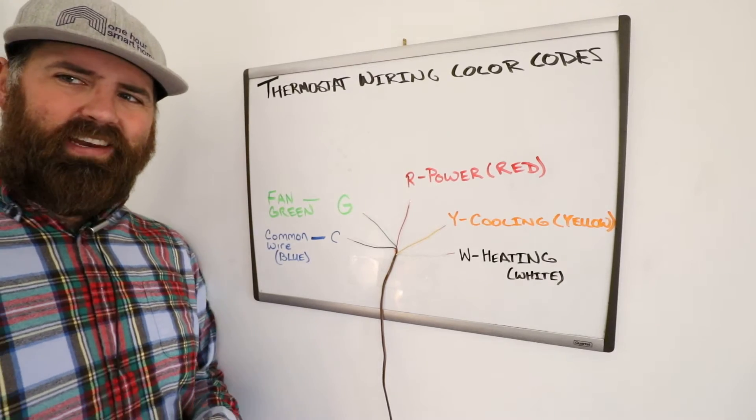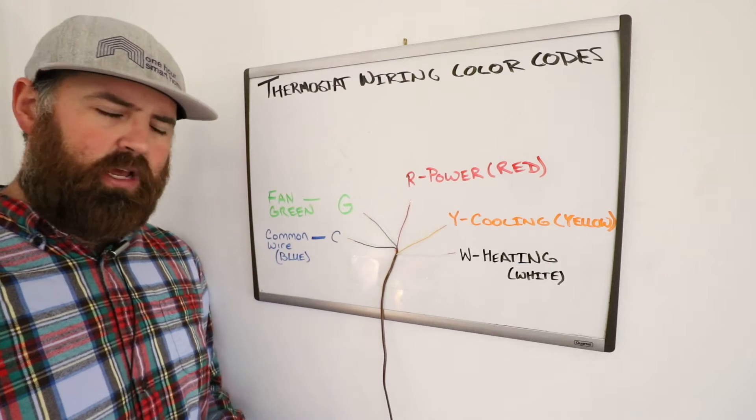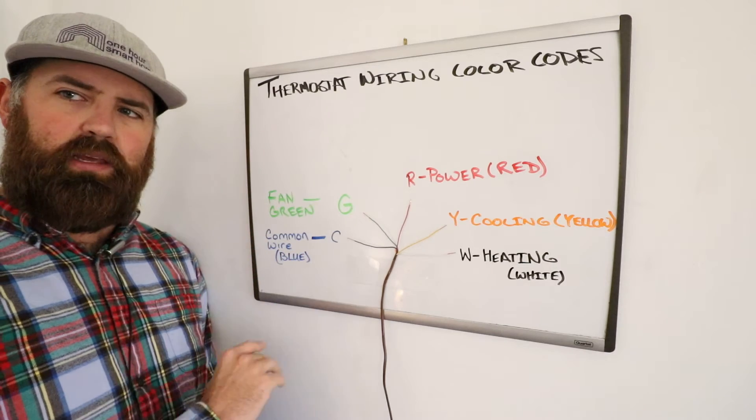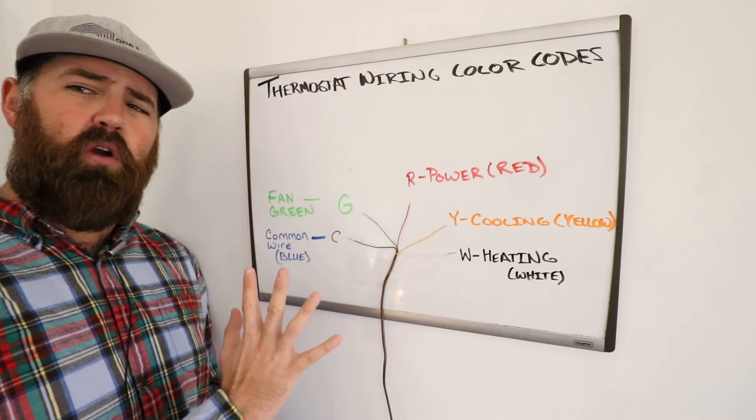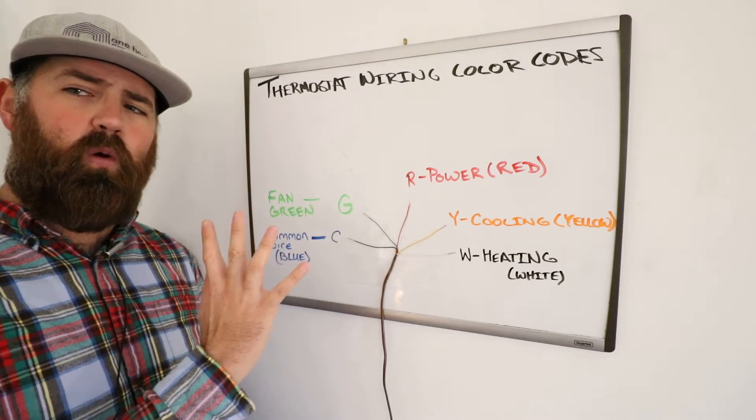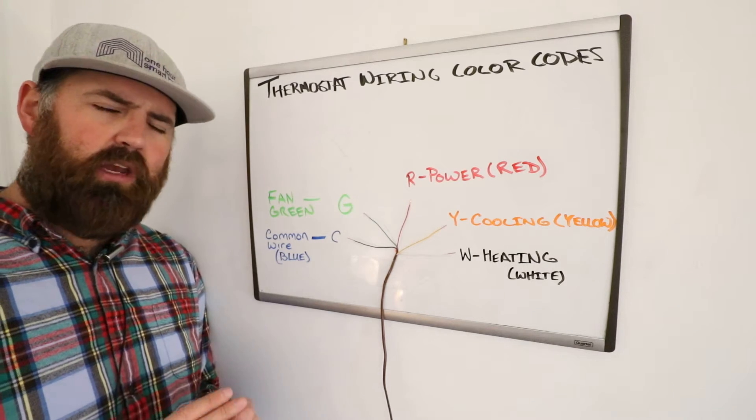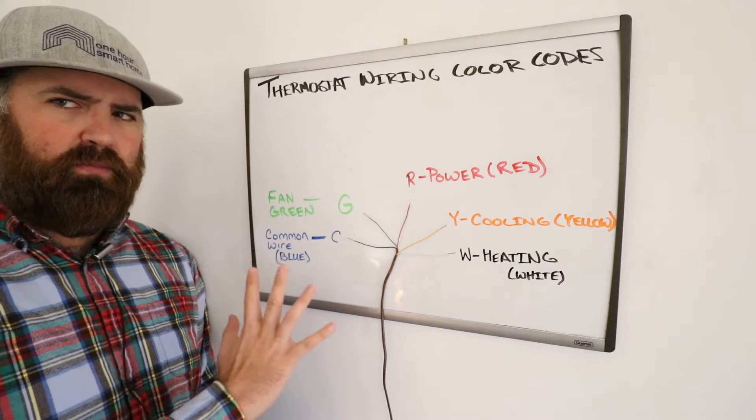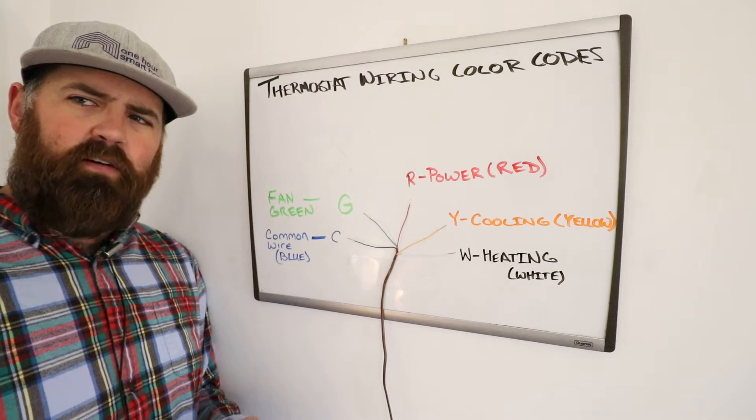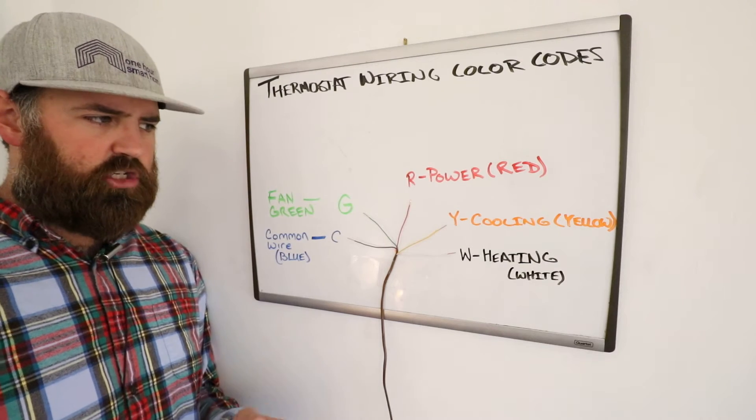So what we've got here today is a five-wire system. Now these color codes will be the same for a four-wire system, and a lot of the color codes will even transfer over if you've got a seven-wire or eight-wire system, and those are a little bit more complex, so we'll get into those at the end. But this is probably the most common and typical wiring that someone would have for an HVAC system with standard furnace heat and an air conditioner.